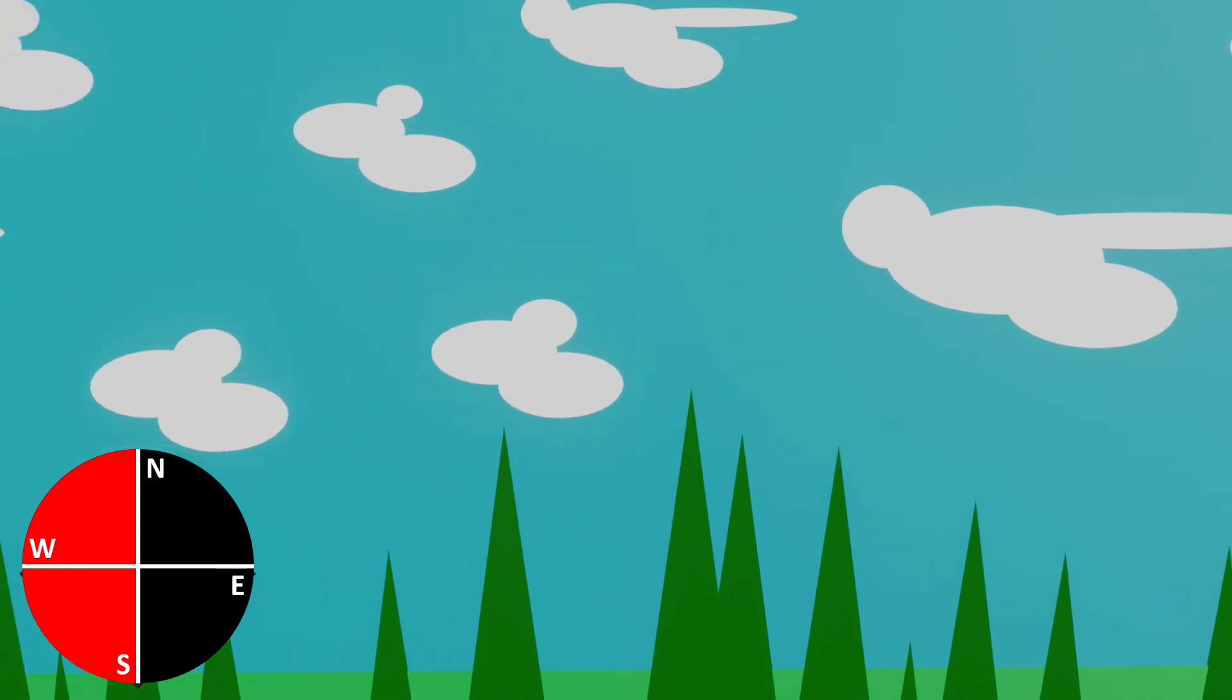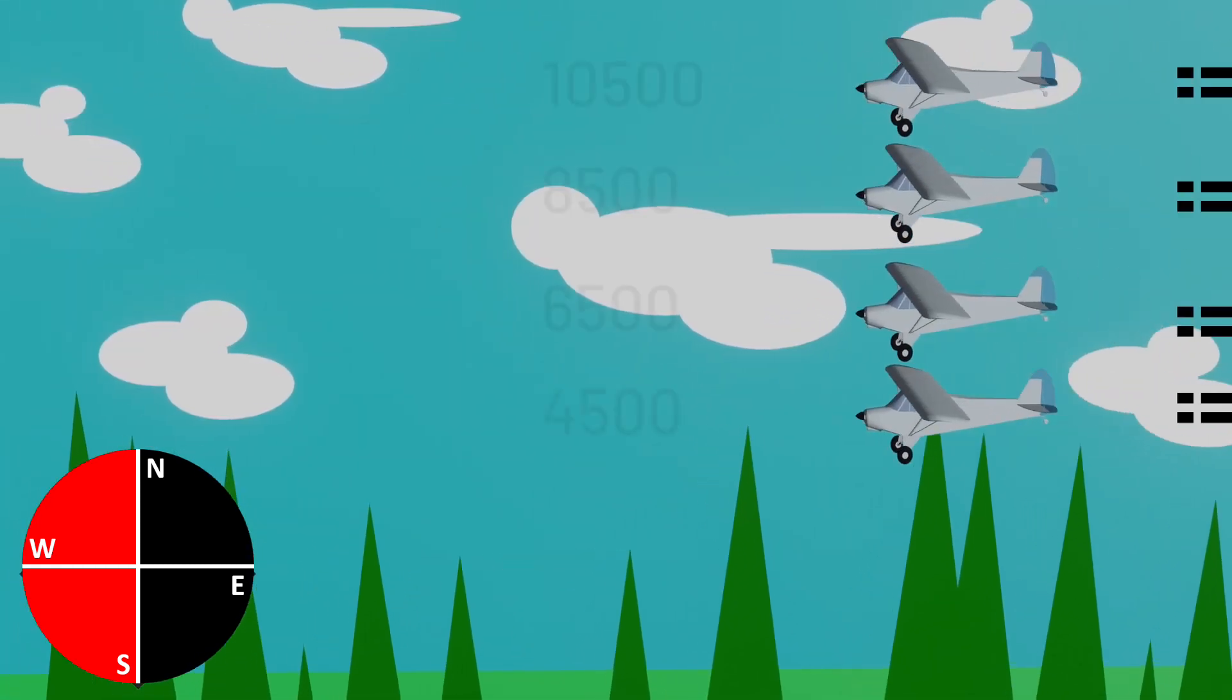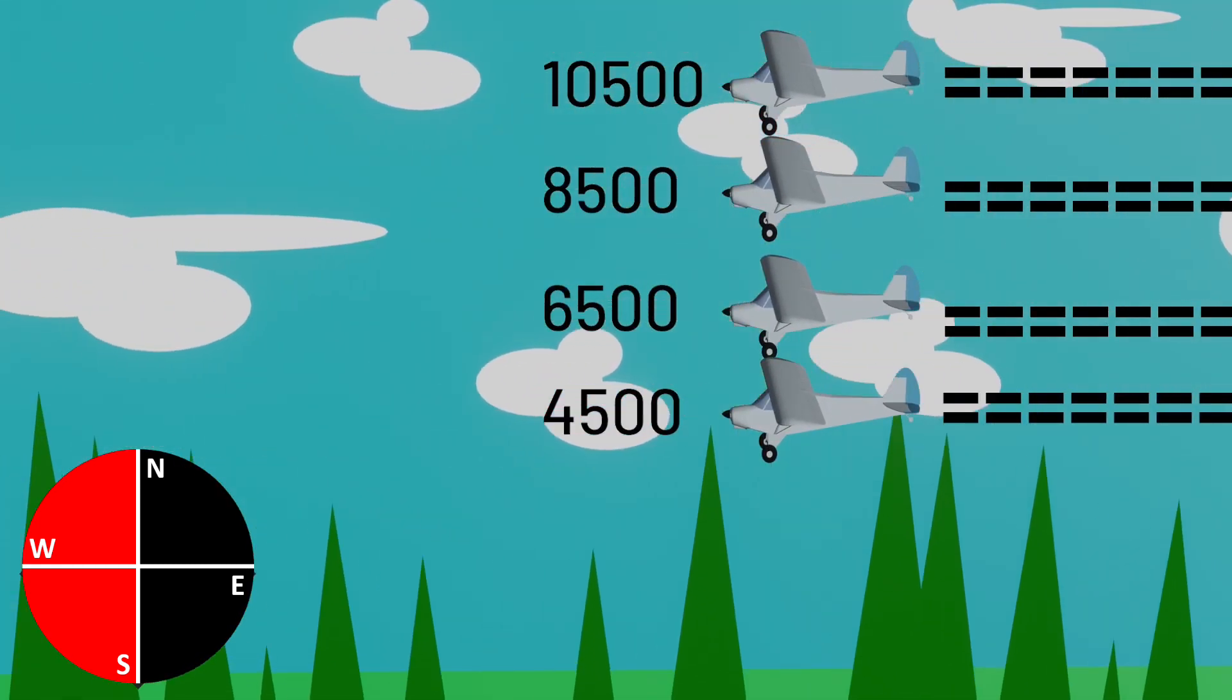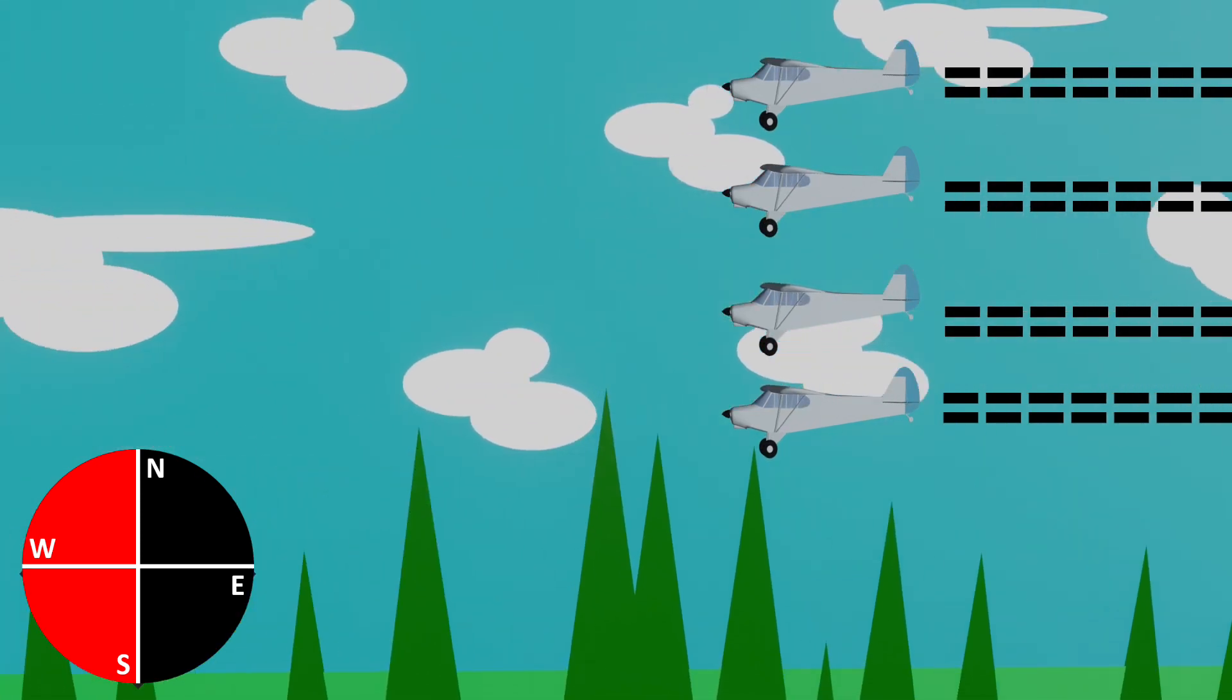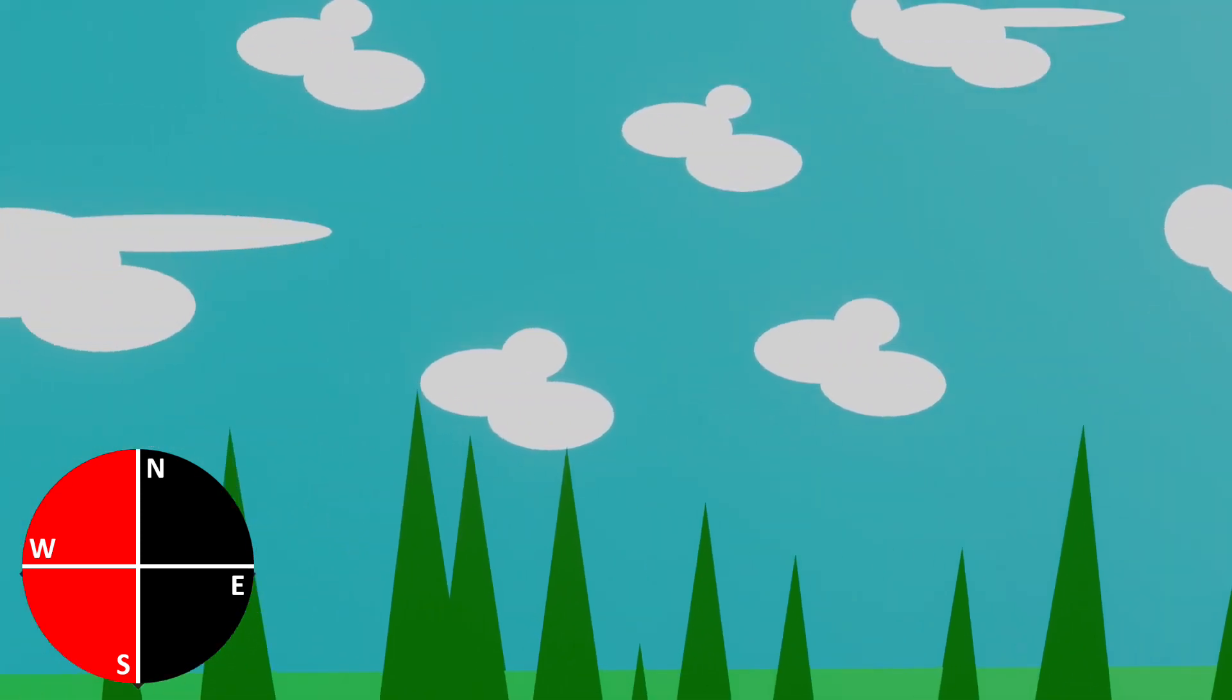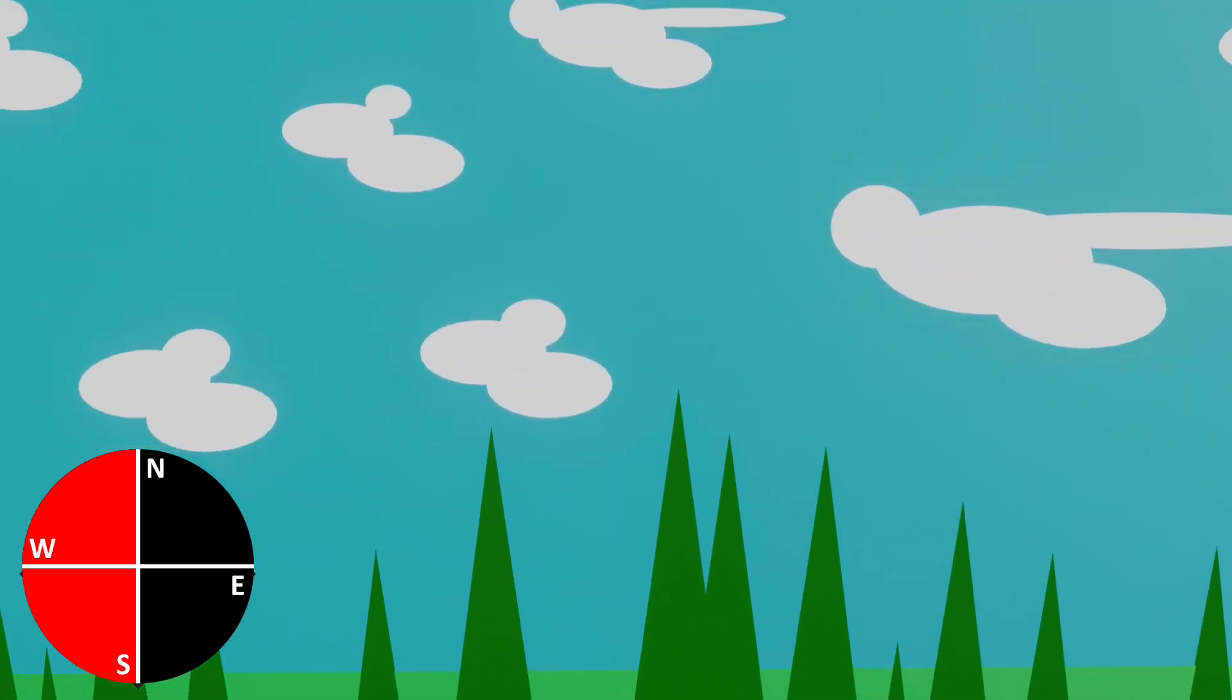One way I remember this is just west is best. Best relates to like an even number. It's more round. It's better, easier to work with. So west is best, and that's the even numbers. And then east is the odd.